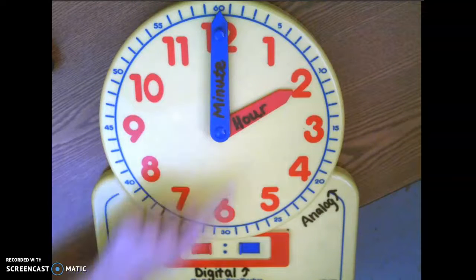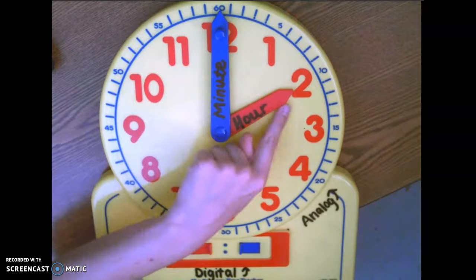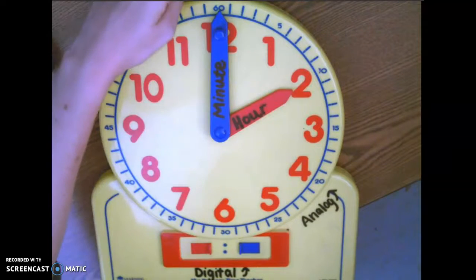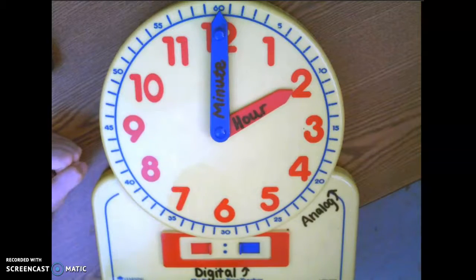So right now, if my hour hand is saying two and my minute hand is at the top, this is two o'clock.